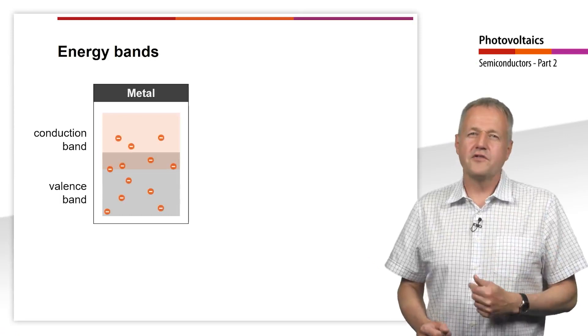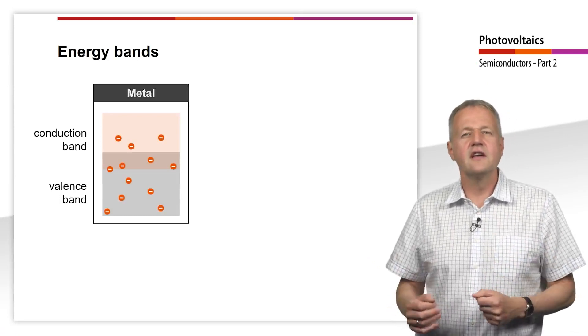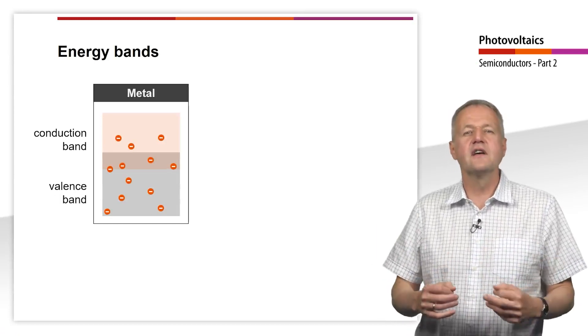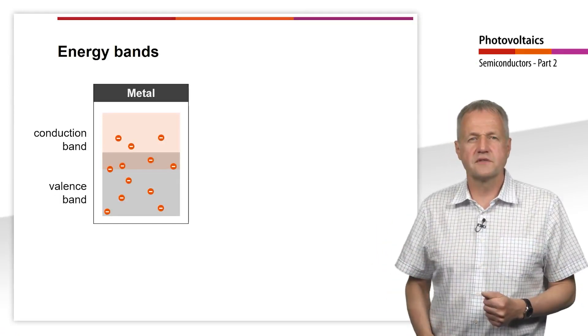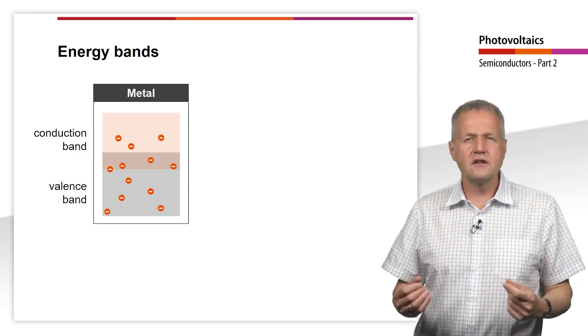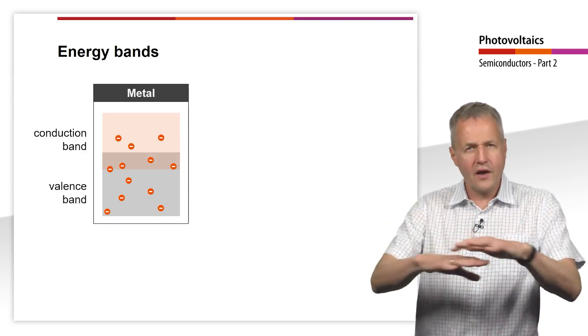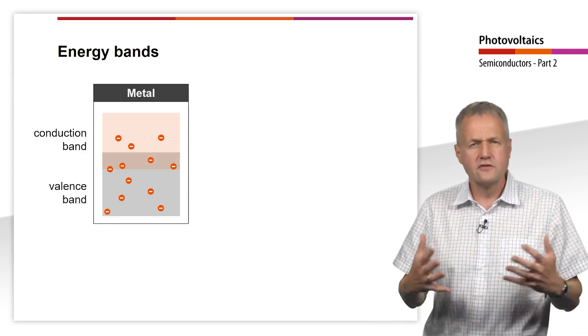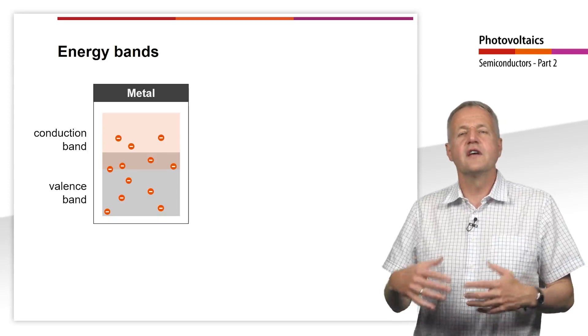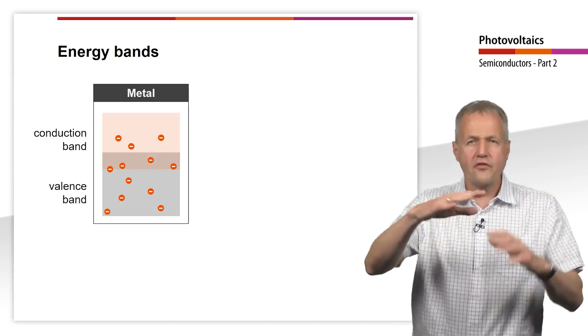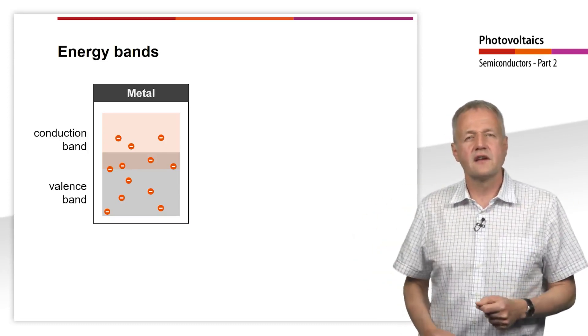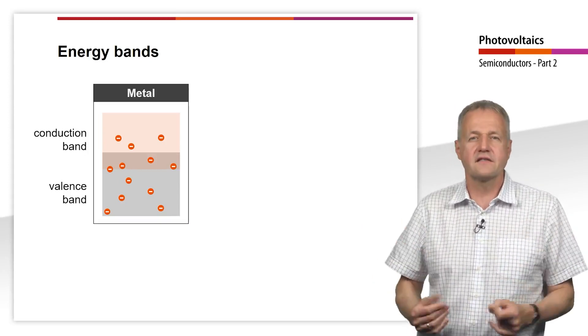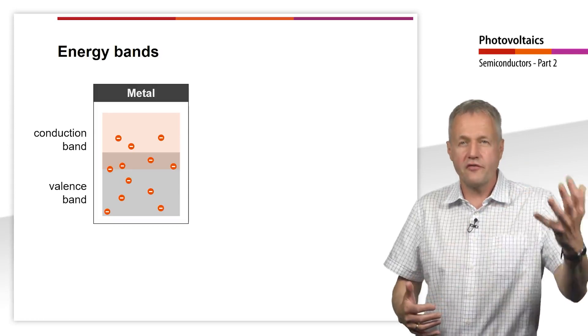We now also want to understand, as announced, in addition to the spatial representation of the charge carriers, the energetic approach. In the metal, the valence and conduction bands overlap. But since the conduction band is not occupied with electrons, the electrons from the valence band can move freely here.